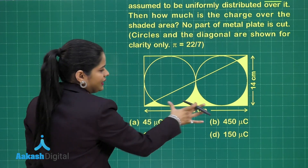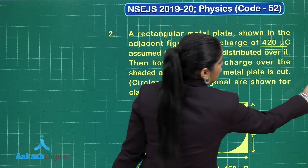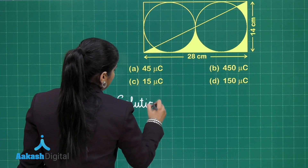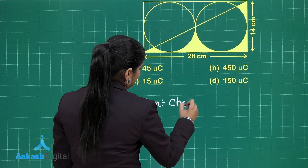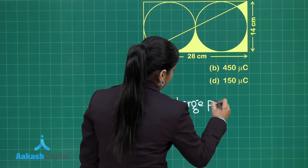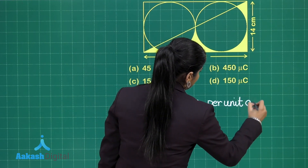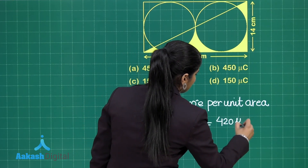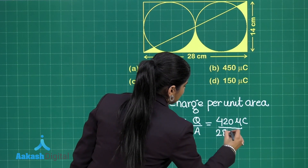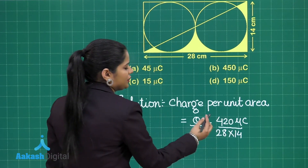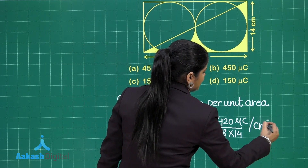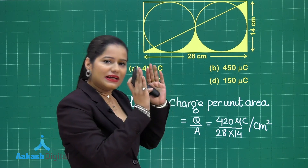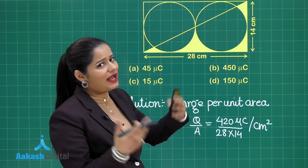This is a rectangular plate and we are given the length and breadth as well. The charge per unit area is Q divided by A. The charge given to the plate is 420 microcoulombs and the area of the plate is 28 × 14. So this gives 420 divided by (28 × 14) microcoulombs per centimetre squared as the charge per unit area. We then multiply the area of the shaded region by this charge per unit area.